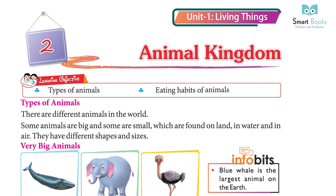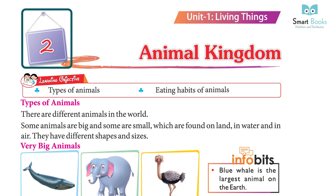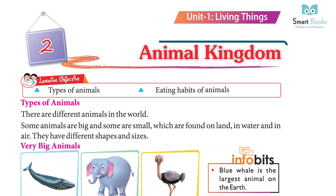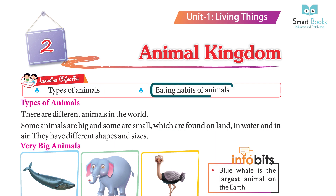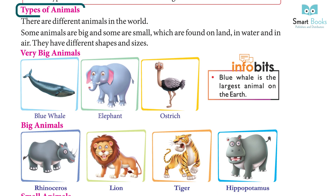Unit 1: Living Things, Chapter 2: Animal Kingdom. Learning objectives: types of animals, eating habits of animals.